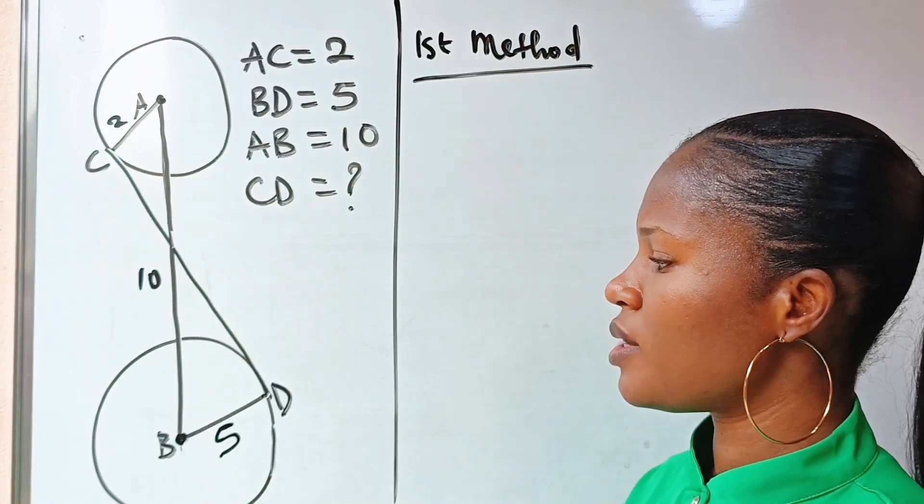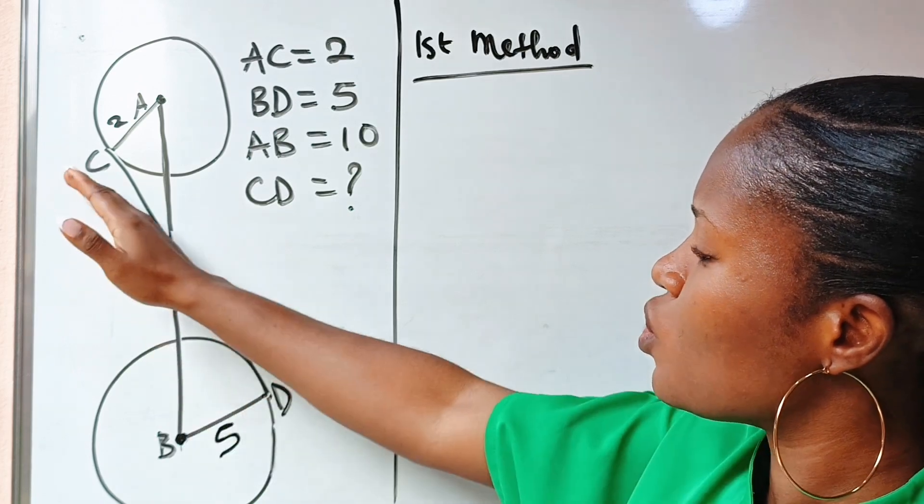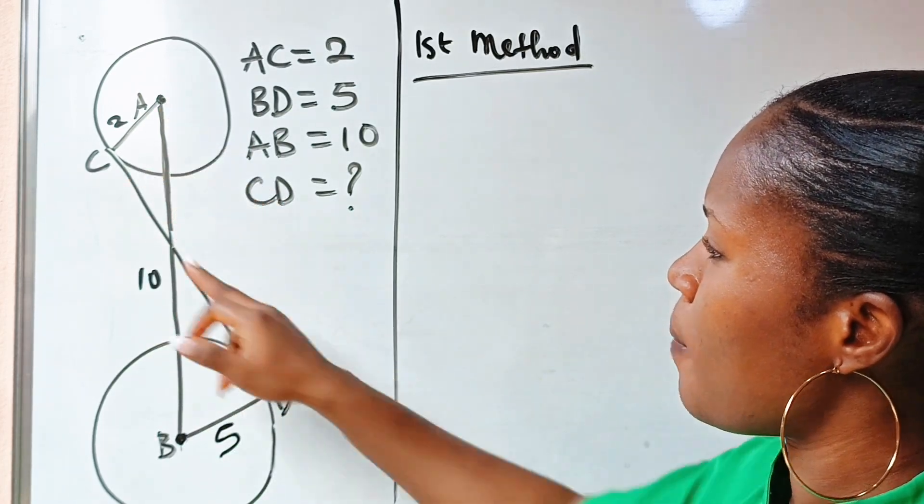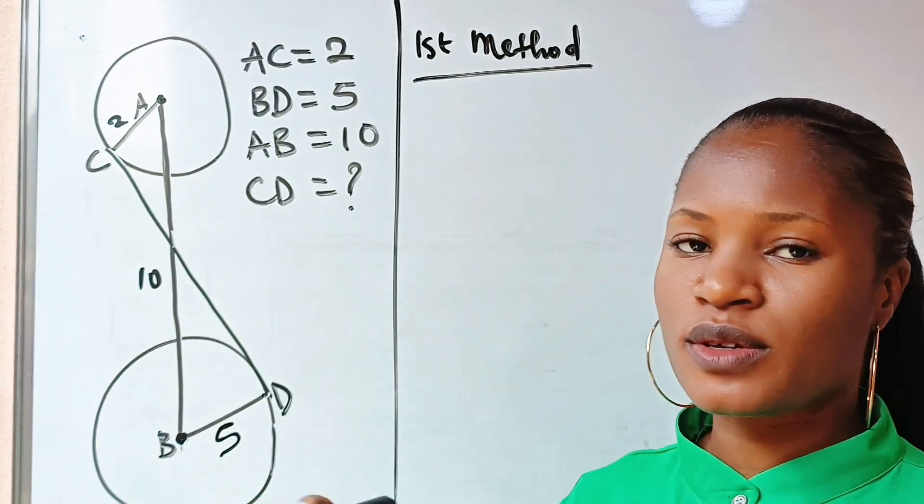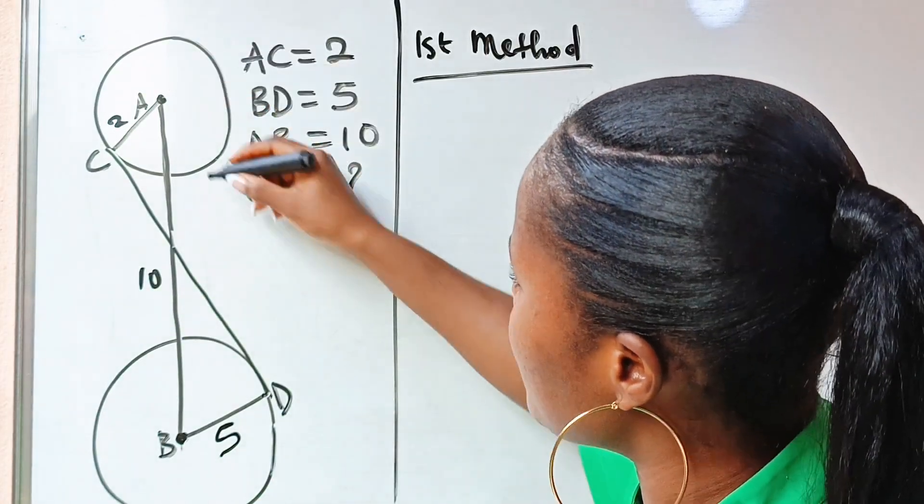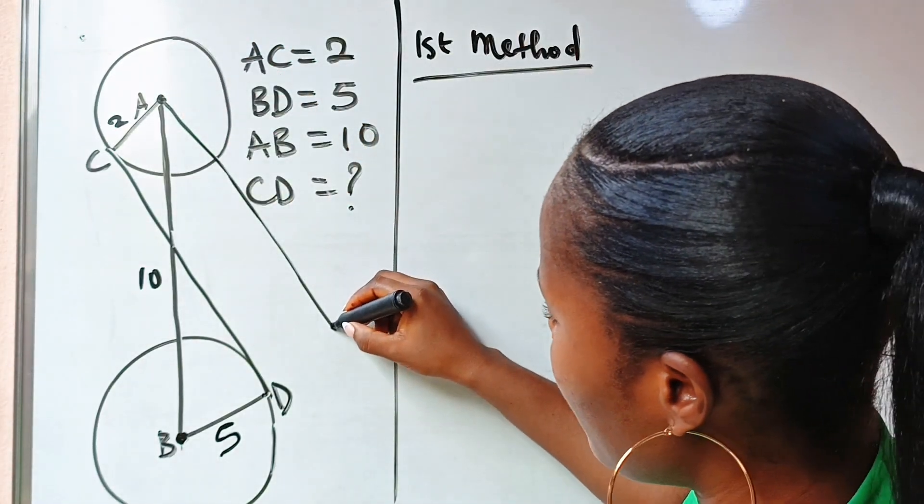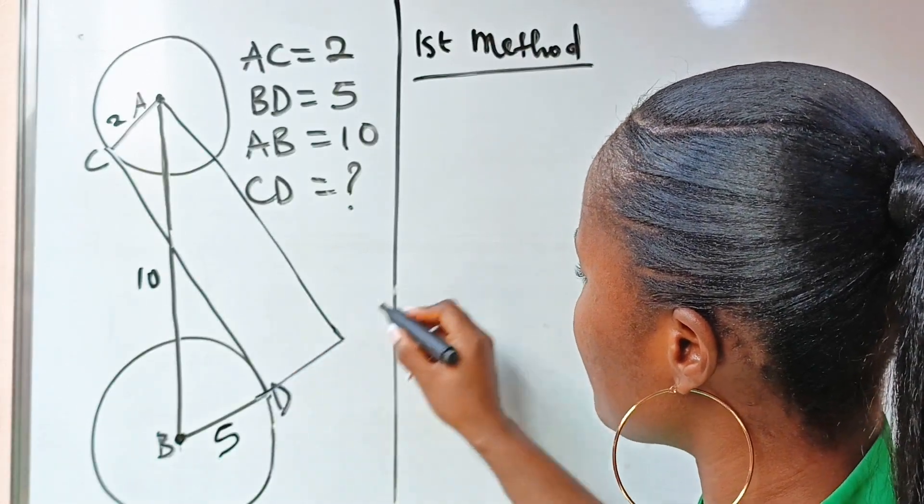First method: We are going to draw a line that is parallel to CD from A. Let's draw a line parallel to CD. I'm not going to draw this with any equipment, so it's going to be a sketch. So let's assume this is a line parallel to CD.